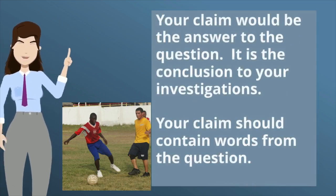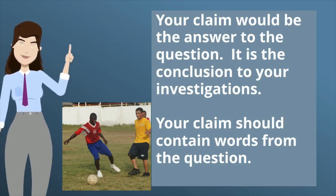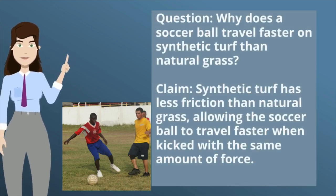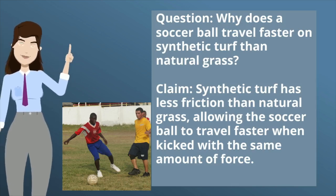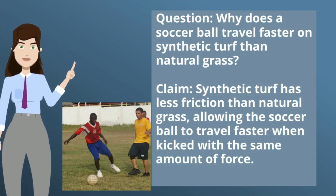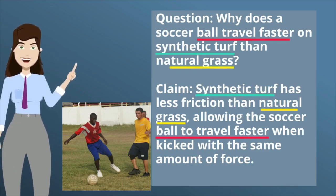Your claim would be the answer to the question. It is the conclusion to your investigations and it should contain words from the question. Again, the question is: why does a soccer ball travel faster on synthetic turf than natural grass? The claim could be: synthetic turf has less friction than natural grass, allowing the soccer ball to travel faster when kicked with the same amount of force. Notice that in the question we talk about the ball traveling faster, and same with the claim. Synthetic turf and natural grass are also in the question and the claim.